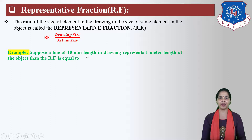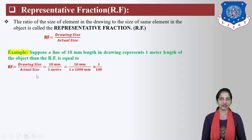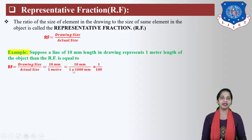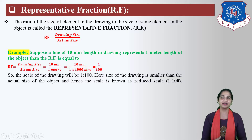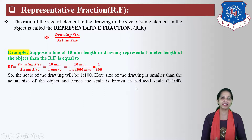Suppose a line of 10 mm length in a drawing represents 1 meter length in the object. Then RF is equal to drawing size divided by actual size. Here, drawing size is 10 mm and actual size is 1 meter. Convert the unit of the denominator to mm: 1 meter equals 1000 mm. So RF is equal to 10 upon 1000, which is 1 upon 100. The scale of the drawing will be 1 to 100. Since the size of the drawing is smaller than the actual size, this scale is known as Reduced Scale 1 to 100.